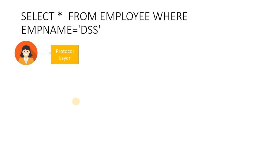The protocol layer goes to the SQL protocol layer. From there, we reach the Command Parser. The Command Parser validates the query — it checks whether the command is valid or not, including checking column names and aliases. That is the Command Parser — it is the first step in the SQL engine pipeline.